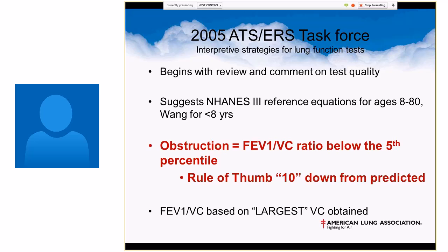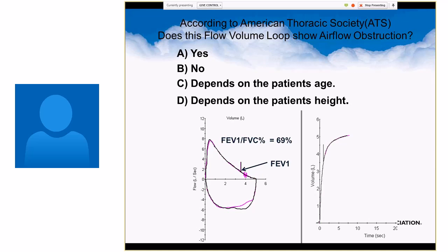This is right out of the American Thoracic Society's 2005 interpretive strategies for lung function tests. Obstruction is the FEV1 over the FVC below the fifth percentile, and again, we're going to talk about the rule of thumb down 10 from predicted. So here's our pre-test question. According to the American Thoracic Society, does this flow volume loop show airflow obstruction? We have A, which is yes, B, no, C, depends on the patient's age, or D, depends on the patient's height.